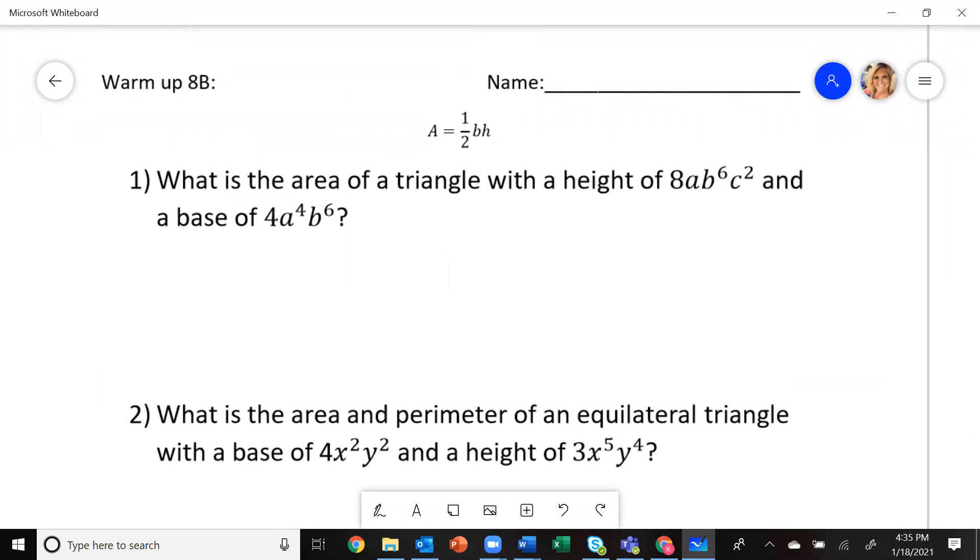The first one says we need to find the area of a triangle with a height of 8AB to the 6C squared, and a base of 4A to the 4th, B to the 6th.